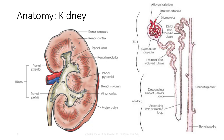The calyces are cup-shaped stems that enclose one or more papilla. There are usually fewer calyces than pyramids. Minor calyces unite to form major calyces, and the major calyces unite to form the renal pelvis. The renal pelvis lies within the hilum. The hilum is a longitudinal slit in the medial border for transmission of blood vessels, nerves, lymphatic vessels, and ureters. The renal pelvis is continuous with the ureter.